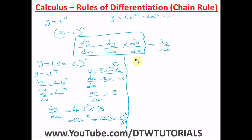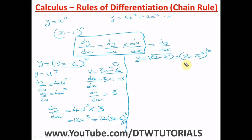Let's do another example. Find the derivative of y = √(2 − x³). First, simplify: this is the same as y = (2 − x³)^(1/2). Let u = 2 − x³, so y = u^(1/2).